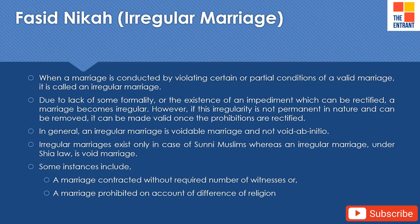Fasid nikah or irregular marriage. When a marriage is conducted by violating certain conditions or partial conditions of a valid marriage, it is called an irregular marriage. Due to lack of some formality or the existence of an impediment which can be rectified, a marriage becomes irregular. However, if this irregularity is not permanent in nature and can be removed, it can be made valid once the prohibitions are rectified. In general, an irregular marriage is a voidable marriage and not void ab initio. Irregular marriages exist only in the case of Sunni Muslims, whereas an irregular marriage under Shia law is a void marriage. Some instances include a marriage contracted without the required number of witnesses, or a marriage prohibited on account of difference of religion.